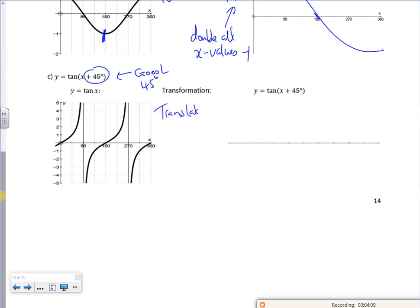So it's a translation minus 45, zero. So what I do is I cheat, and I would graph it as normal.